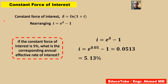Another problem involves a constant force of interest. We know delta equal to ln of 1 plus i, and rearranging gives i equal to e to the power delta minus 1. Given a 5% force of interest, we find the corresponding annual effective rate of interest by computing i equal to e to the power 0.05 minus 1, which gives approximately 5.13%. A very straightforward application of the expression.